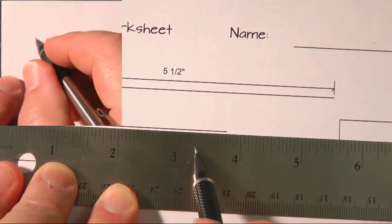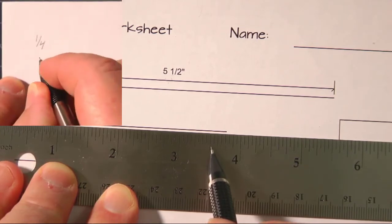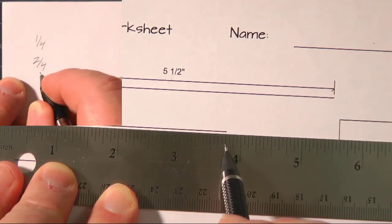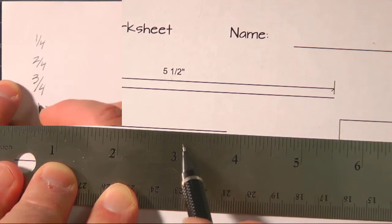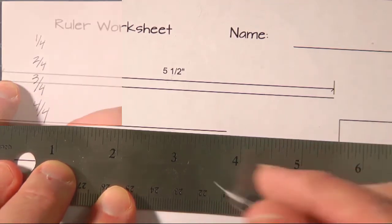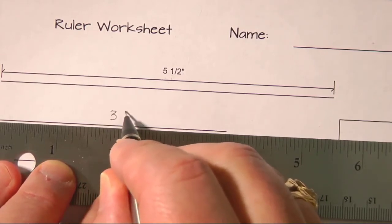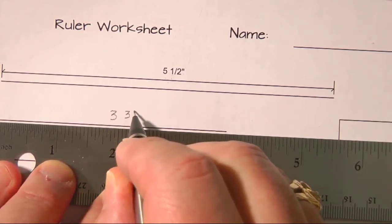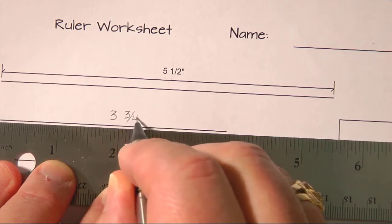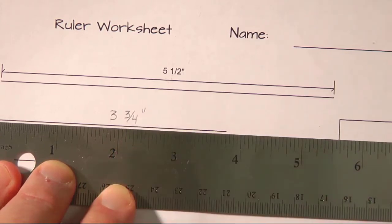And it's one quarter, two quarters which is also half an inch, three quarters. So we would write that down over here, three and three quarters of an inch.